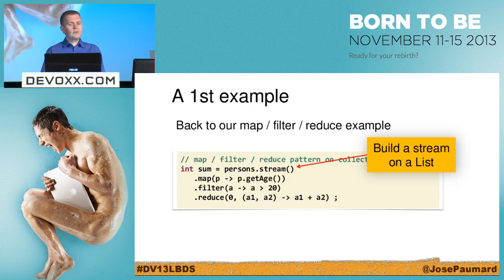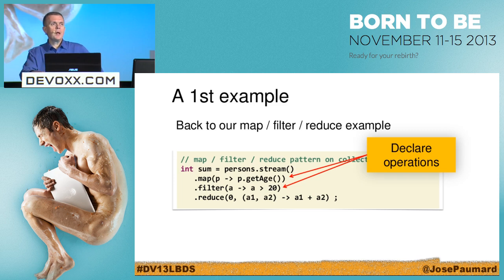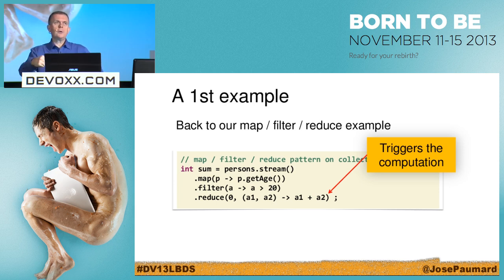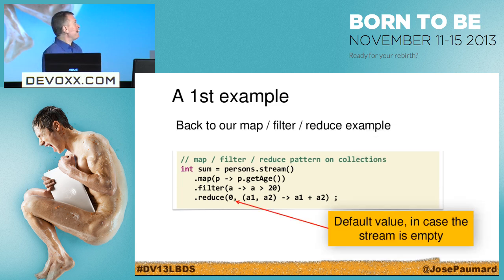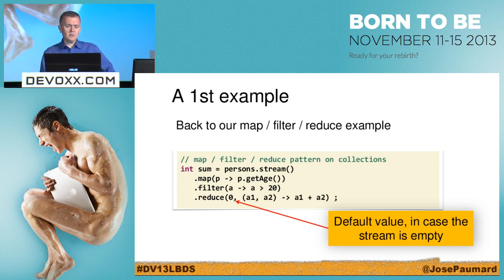Let's look at our first example. persons.stream() builds a stream on a list of persons. Then I declare operations: map and filter — my map/filter/reduce pattern. Then I reduce by calling the reduce method, which triggers the computation. Map and filter don't do anything; the reduce call triggers the job. The zero I pass as the first parameter of reduce is the default value in case the stream is empty — even if I filter a non-empty list, the result of filtering might be an empty list, so I need to handle that case.